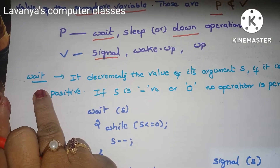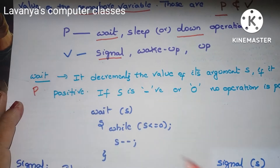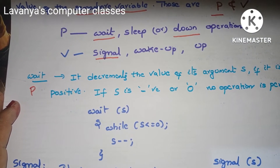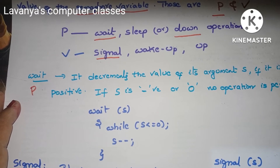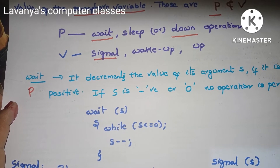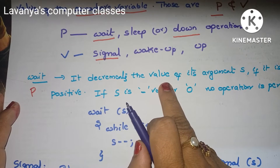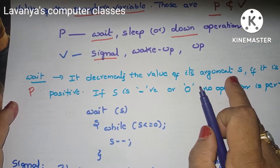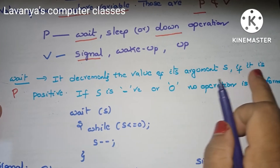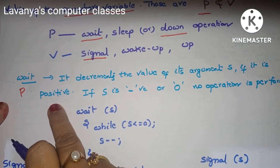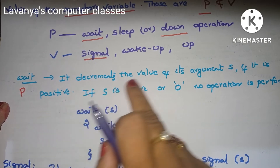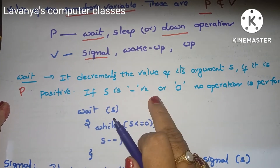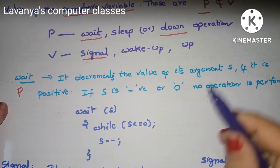The wait operation, also known as P, sleep, or down operation, always decrements the value of its argument S — S for semaphore. If S value is positive, it automatically decrements by one. If S value is negative or zero, no operation is performed.